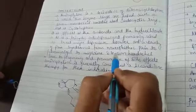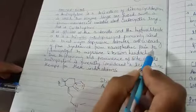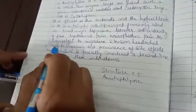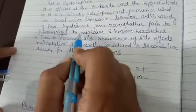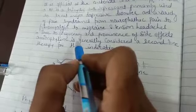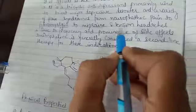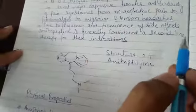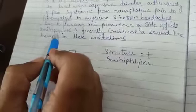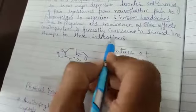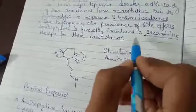Many pain syndromes we treat from neuropathic pain, which is nerve-related pain, to fibromyalgia in the muscles and joints, to migraine, which is headaches that repeat at small intervals, and tension headaches. We can treat with amitriptyline hydrochloride drugs. Due to frequency and prominence of side effects, amitriptyline is considered a second-line therapy for these indications.